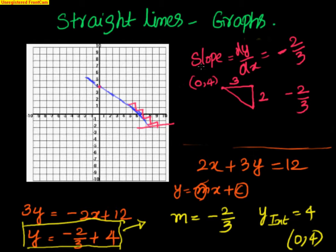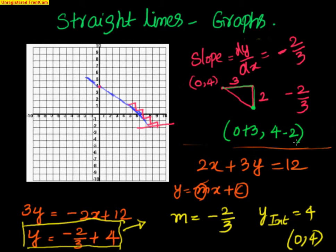Let me explain that again. Slope is dy by dx, which is minus 2 by 3. That means if I know a point, from that point, if I move in the positive x direction by 3 units, I have to go down in the vertical direction by 2 units to get the next point. From (0, 4), moving 3 units right gives x-coordinate 0 plus 3. The y-coordinate is 4 minus 2, since I went 2 units down. This makes the coordinate (3, 2).